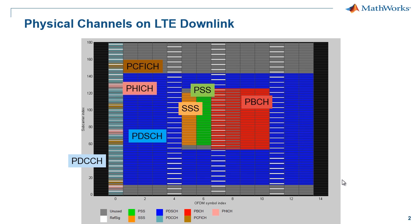Here we simply want to briefly summarize the process a UE goes through in order to synchronize to a network. Here are the main channels involved. First, the PSS and SSS, which come every five subframes and let us figure out the frame timing and the cell ID, or the language the cell speaks.